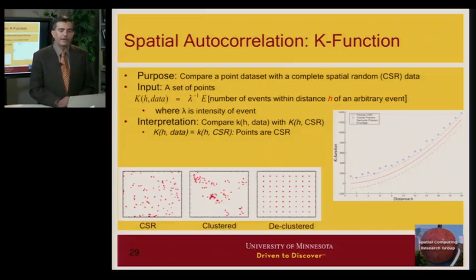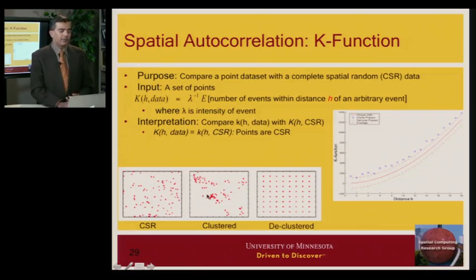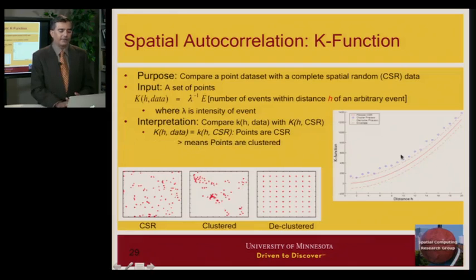For real datasets, other things can happen. If your points are clustered — they like each other — you will see that the K function is well above the complete spatial randomness line. Your K function will lie in the upper region, significantly above what is expected for spatially random points.